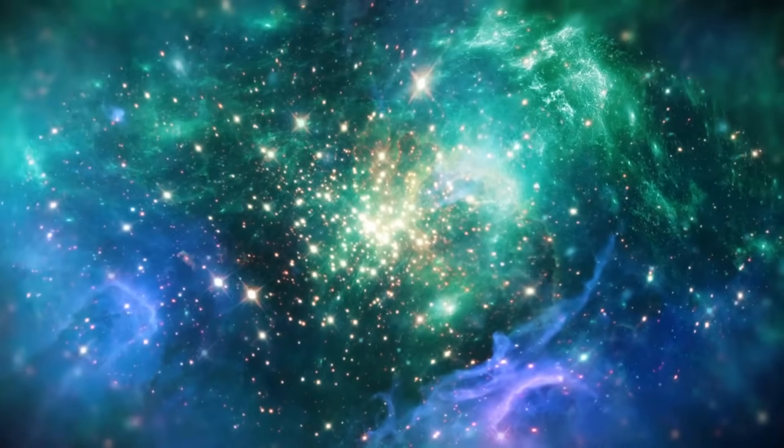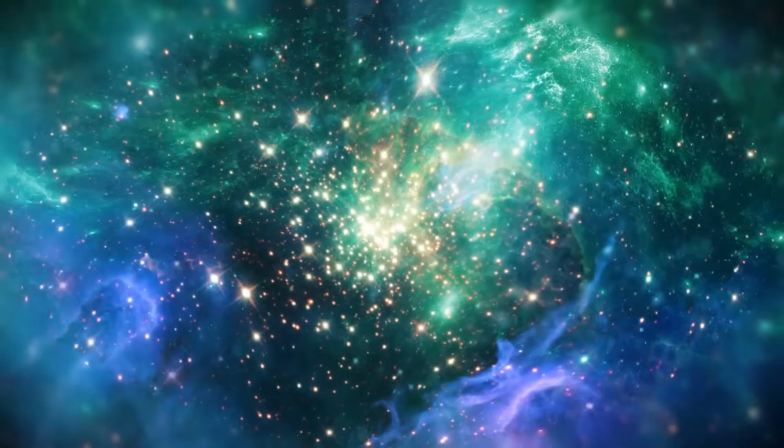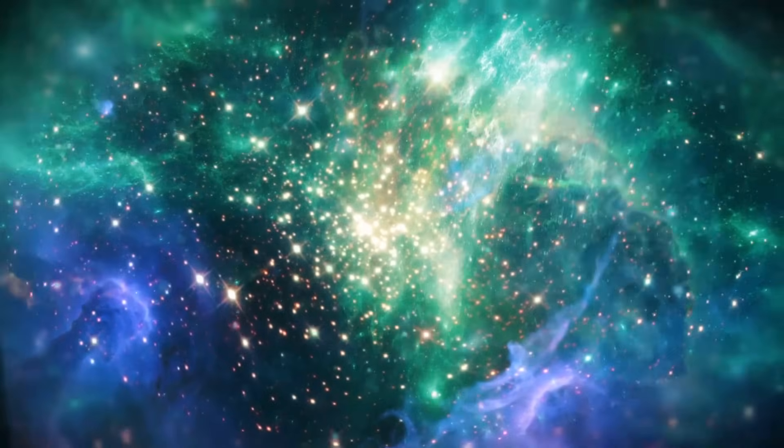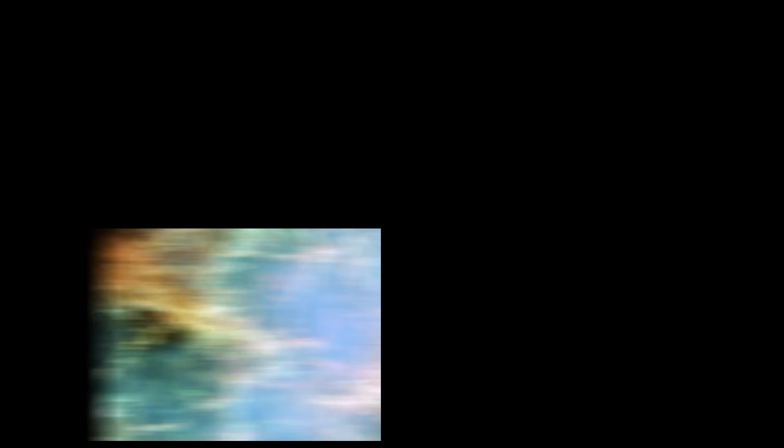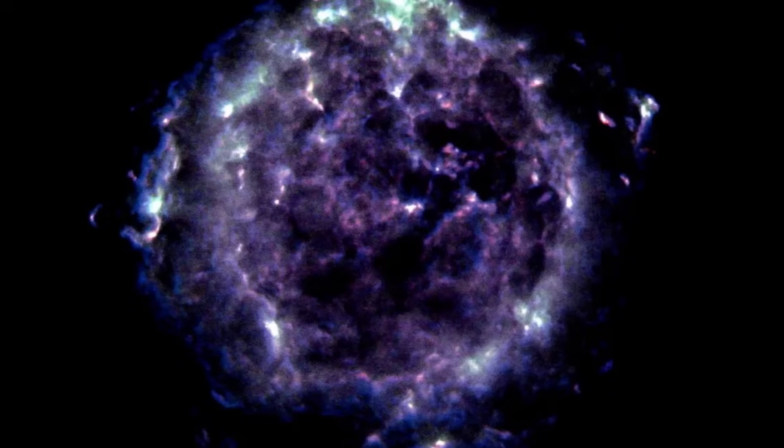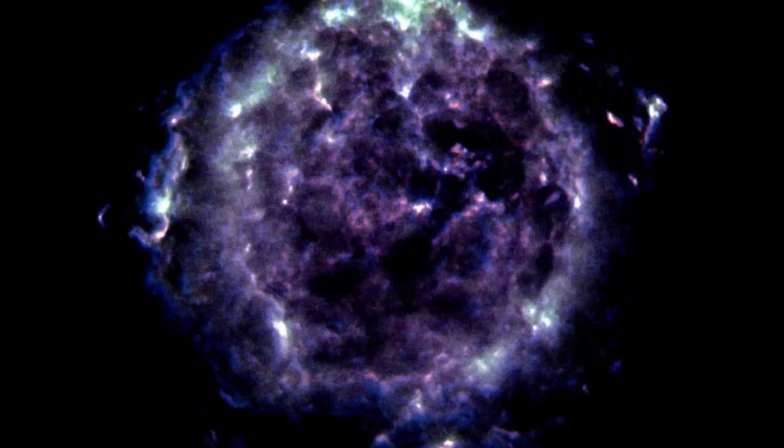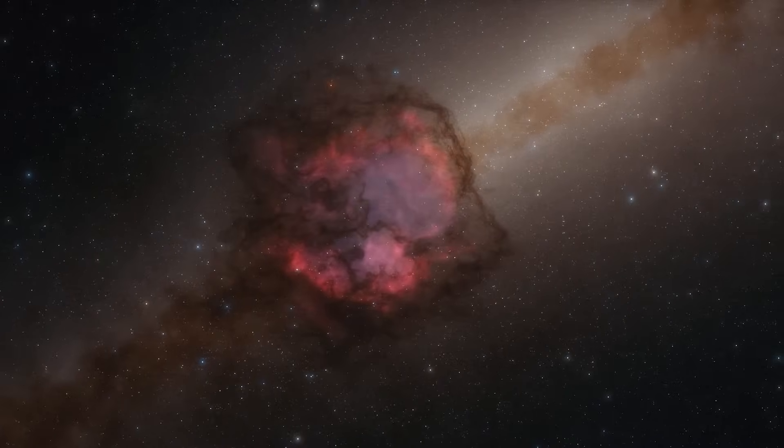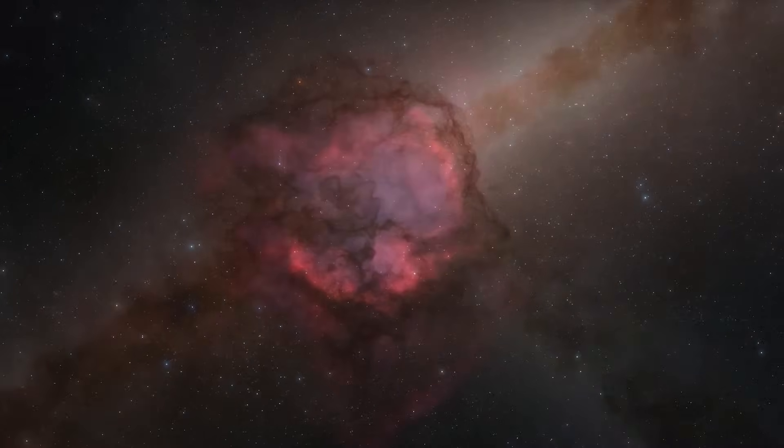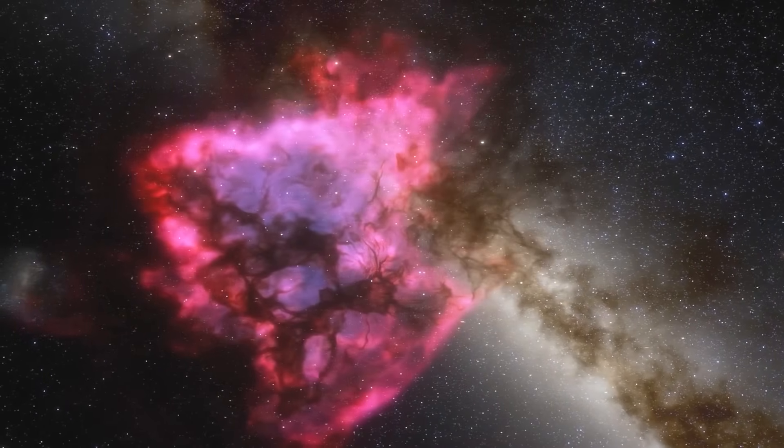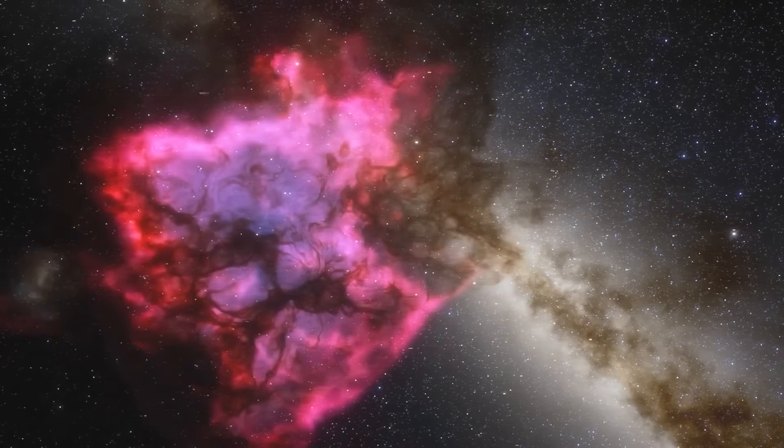Between 300 and 400 supernova remnants have so far been found in our Milky Way galaxy. Some of these are sure things, including the Crab Nebula, the Veil Nebula, the Vela supernova remnant, and the Cassiopeia A supernova remnant, which is about 330 years old. The youngest known supernova remnant in our galaxy is G1.9 plus 0.3, which is found in the Milky Way's inner portion, and is about 130 years old.